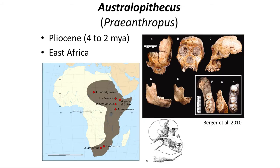Australopithecus, also synonymized with Paranthropus, lived across a wide swath of East Africa, from South Africa to Ethiopia. The genus can be found ranging from 4 to 2 million years ago and lived in the open habitats near the forest edge.